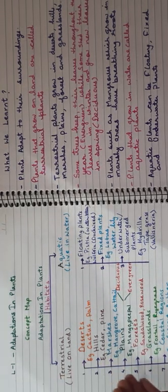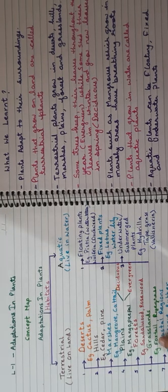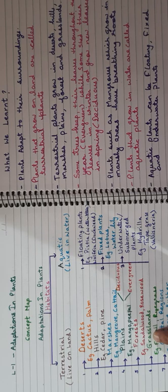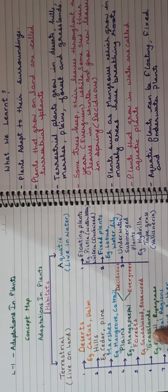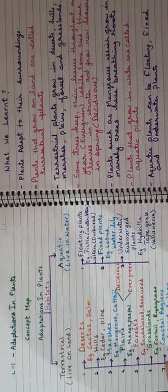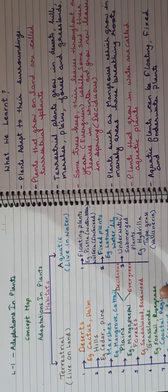Next is grasslands. You know that savannah, in South Africa, is a very famous grassland. Grasslands are the land where only grass grows. Examples of grassland plants are foxtail and rye grass.